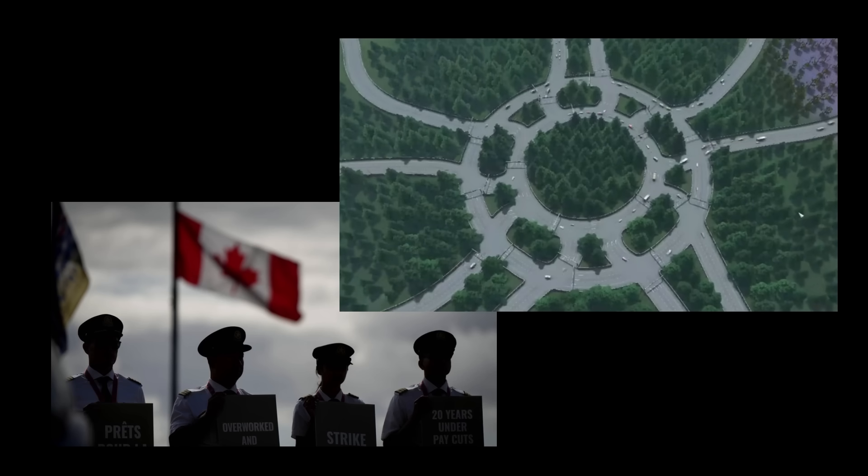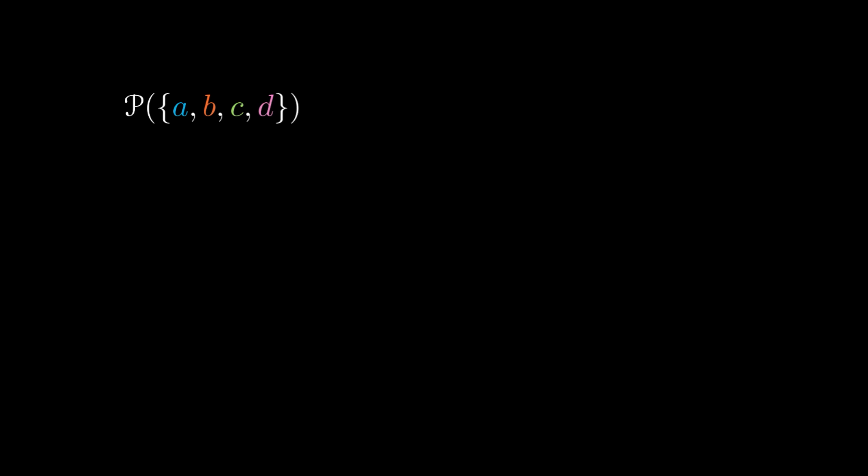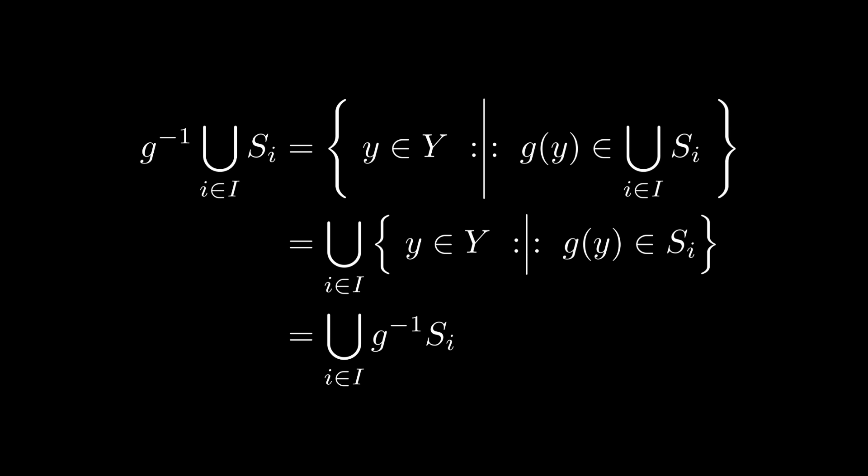Of particular interest to us right now are unions and intersections. The set-theoretic union corresponds to the logical operation of disjunction. An element is contained in the union of two subsets A and B if it is contained in A or it is contained in B. In a power set, we can take the union of as many subsets as we want. Moreover, the preimage of the union of a family of sets is exactly the union of the preimages of these sets.